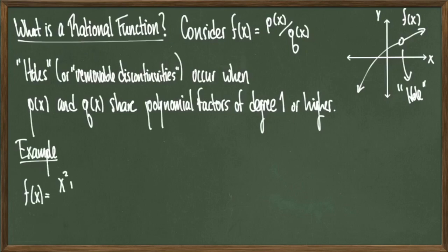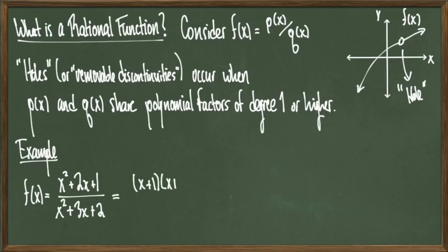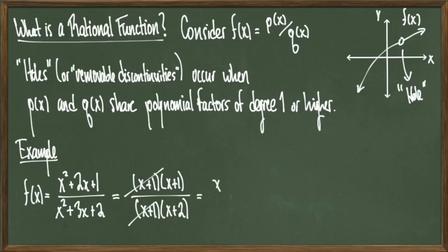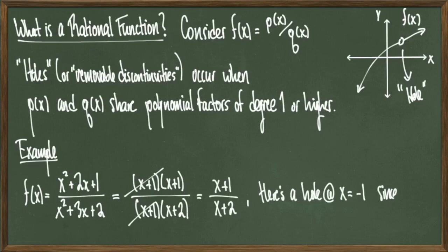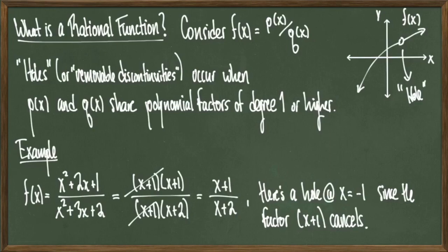Let's look at a quick example. Let f of x equal to x squared plus 2x plus 1 over x squared plus 3x plus 2. Factoring both gives x plus 1 times x plus 1 over x plus 1 times x plus 2. The numerator and denominator share a factor of x plus 1, so that linear factor cancels, leaving x plus 1 over x plus 2 as f of x. The linear factor x plus 1 has a root of x equals negative 1, therefore there's going to be a hole at x equals negative 1. To find the actual point, I would evaluate f of x at x equals negative 1, which we'll do in a future slide.